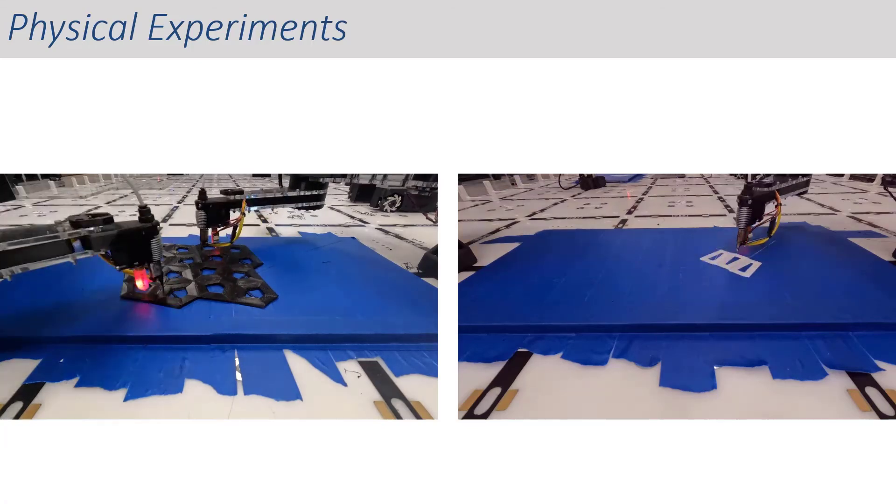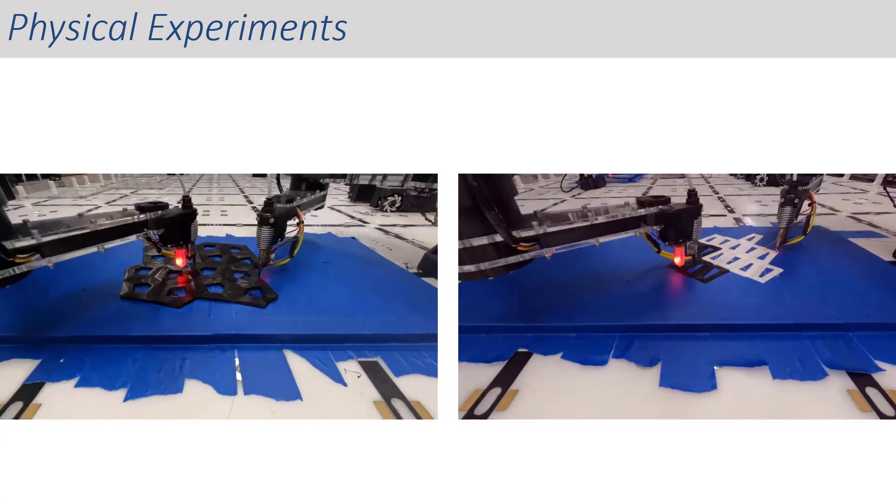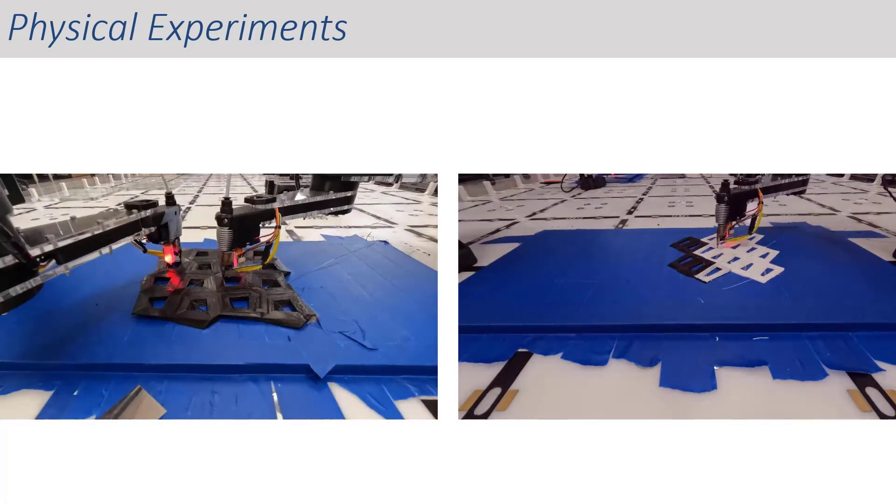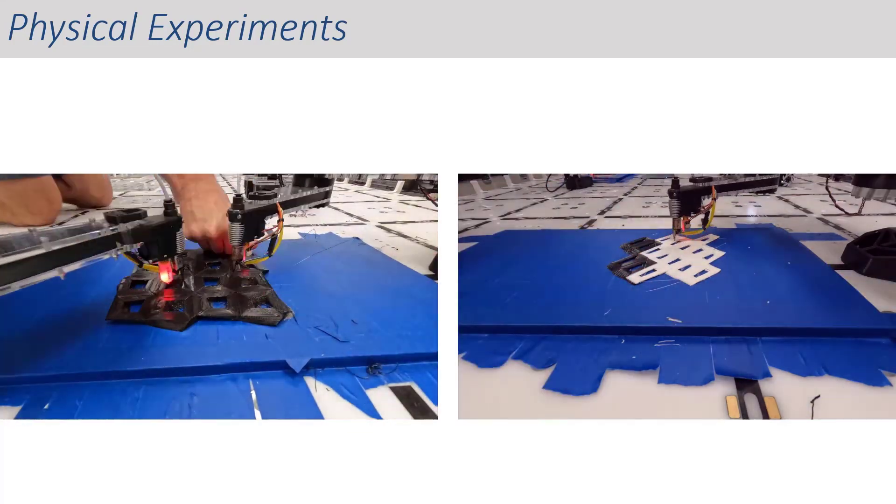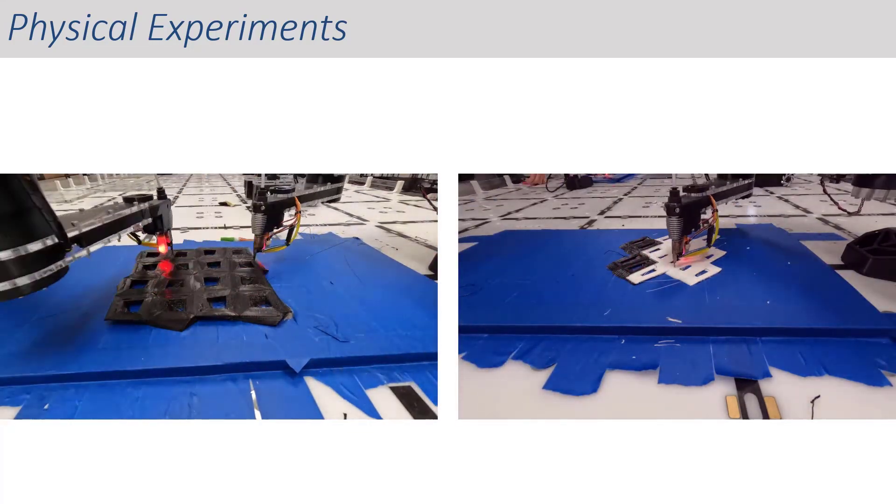However, for the helix structures, some angles of rotation led to a very unequal distribution of work as seen here. This meant that at this angle of rotation, the printing time was much higher than at other angles.